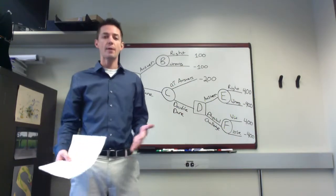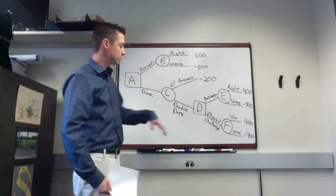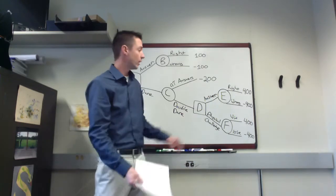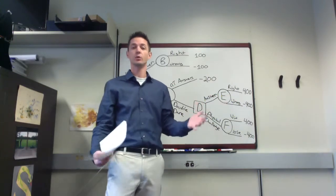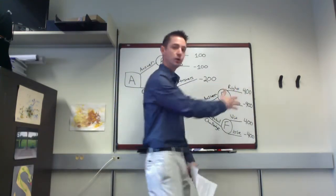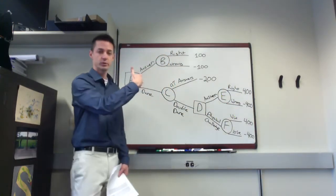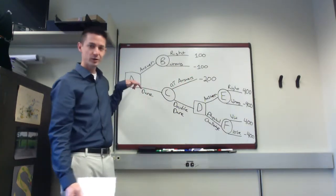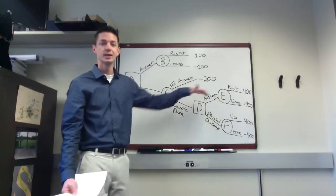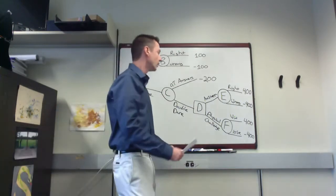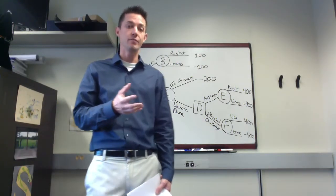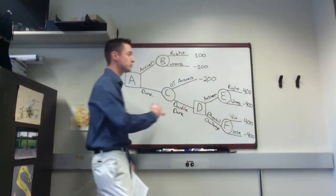To find the optimal decisions, for each decision node we look at the expected payoffs of branches leaving that node and select the highest value. We start with the rightmost nodes and work backwards. One important thing we haven't labeled yet are the probabilities for the uncertain events. We can place these on the branches from each chance node. Getting the answer right from node E has a 60% chance (probability 0.6), and getting it wrong is 0.4.